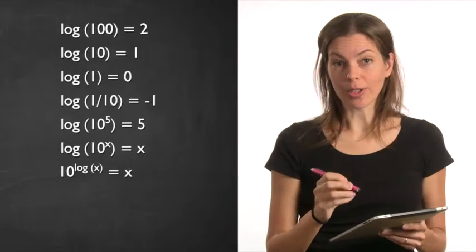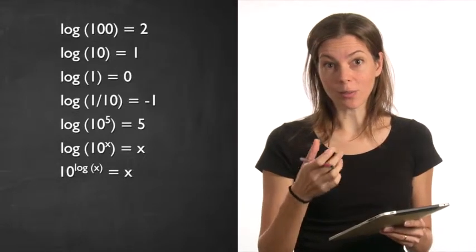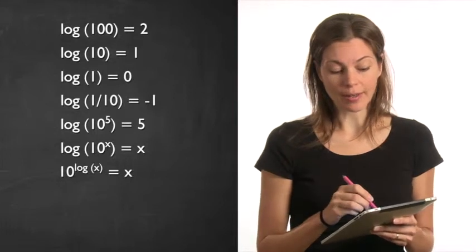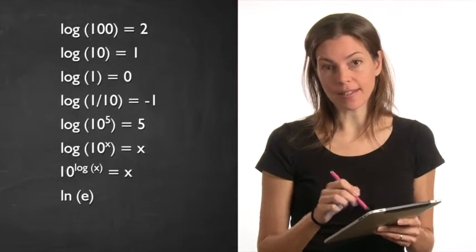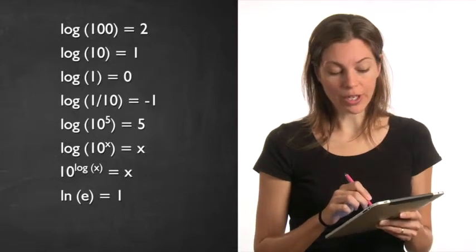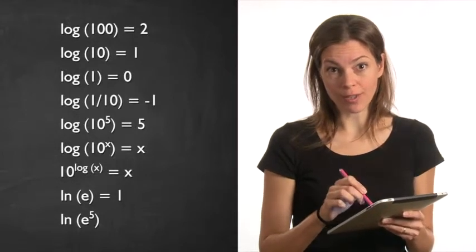The natural logarithm is the corresponding way to deal with exponentials. The natural logarithm of e is 1. The natural logarithm of e to the fifth is 5.